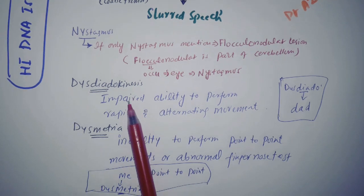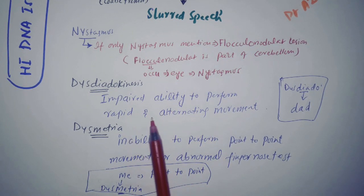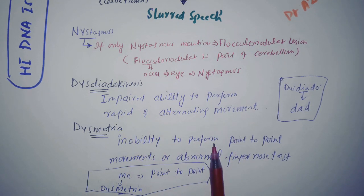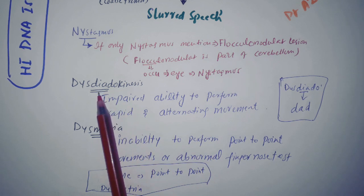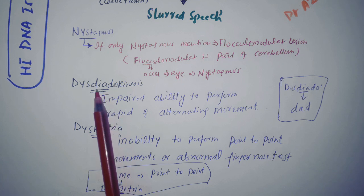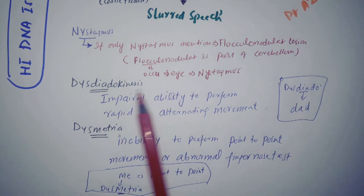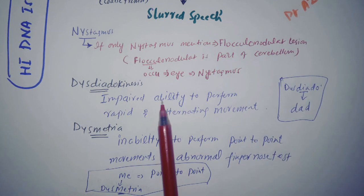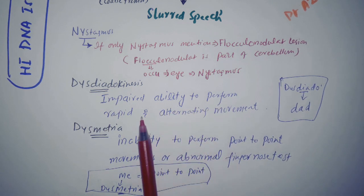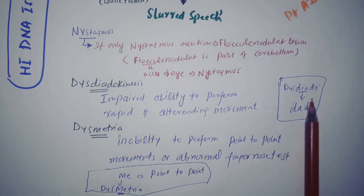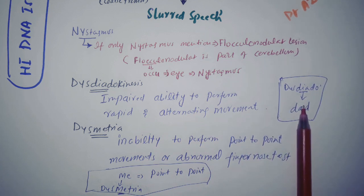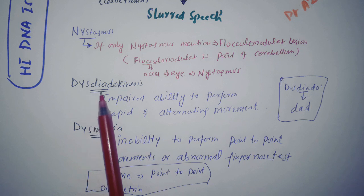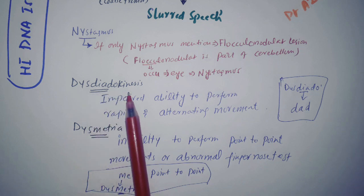Dysdiadochokinesis, impaired ability to perform rapid and alternating movement. How will we remember this? And this is the most important sign of cerebellar lesion. If you see here is the word dead, D-A-D, dead. So in front of dead, we cannot perform rapid movement. And so this is how we will remember what is happening in dysdiadochokinesis.